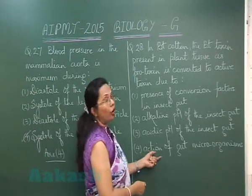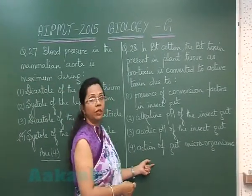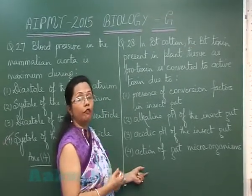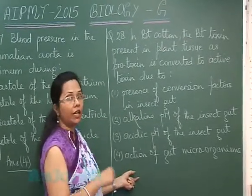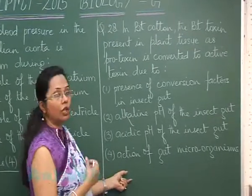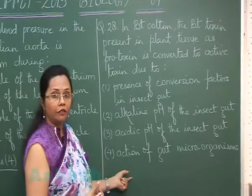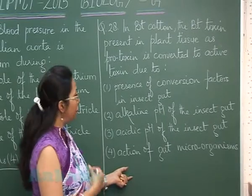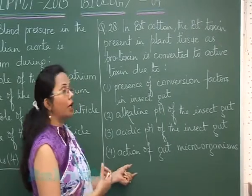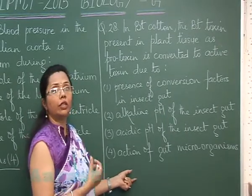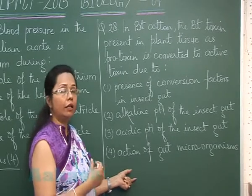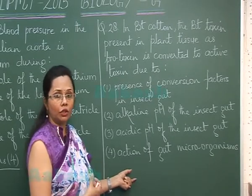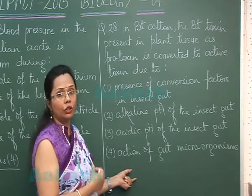Question 28: In BT cotton, the BT toxin present in the plant tissue is in the form of a protoxin — that is, an inactive toxin. It is converted to active toxin when the insect feeds on it. When the insect feeds, the gut pH is alkaline, and the protoxin gets converted into active toxin.